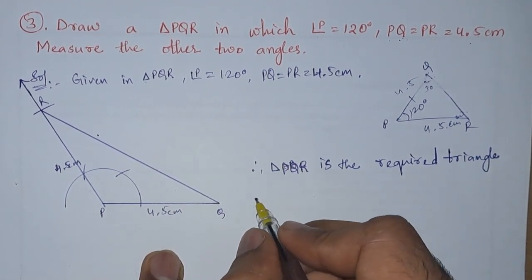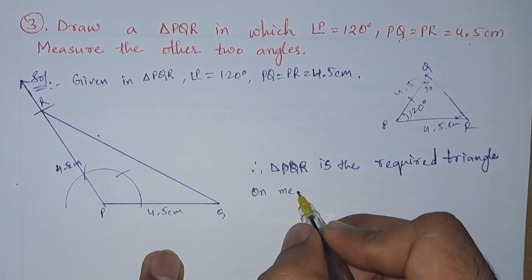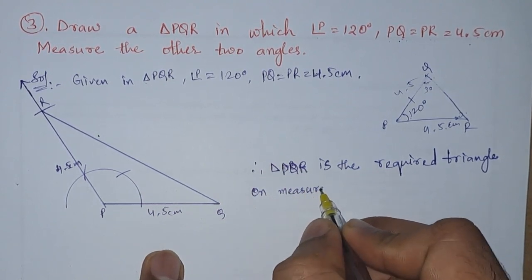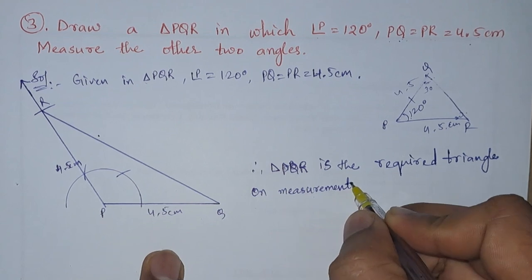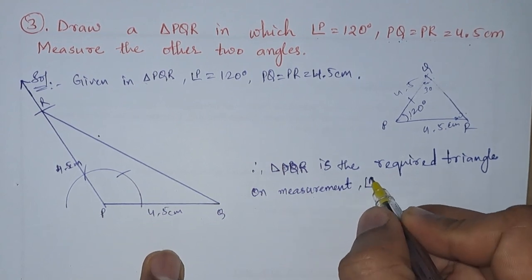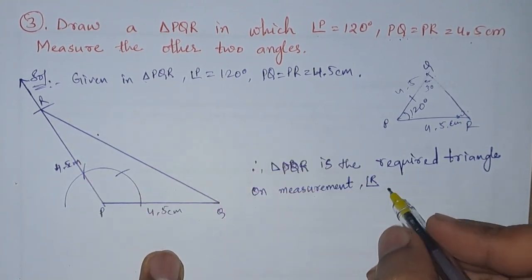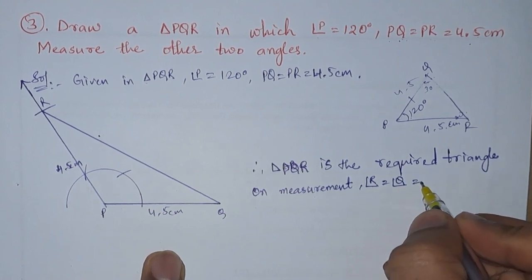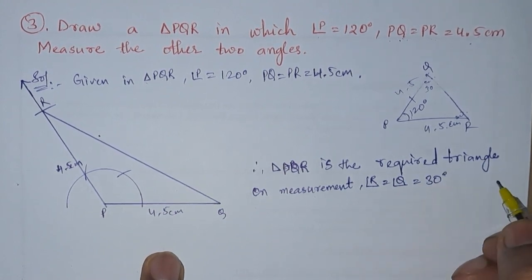And on measurement, when we measured this, we got angle R as 30 and angle Q as 30. Angle R and angle Q equals 30 degrees.